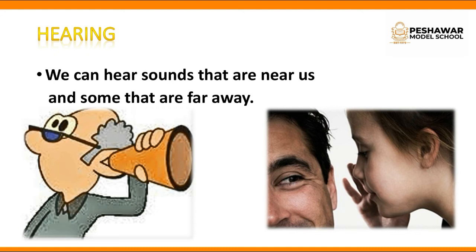We can hear sounds that are near us and some that are far away. If you look at the picture, it shows a little girl whispering into her father's ear — meaning someone close can speak into your ear and you can hear them. In the other picture, someone is trying hard to listen to a distant sound. So we can feel sounds both near and far through our ears.